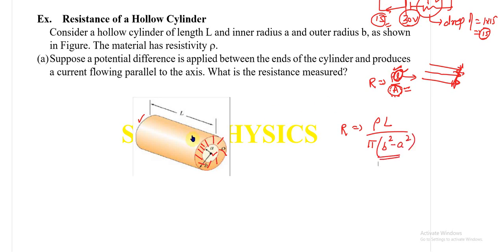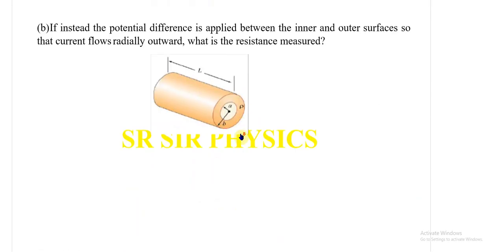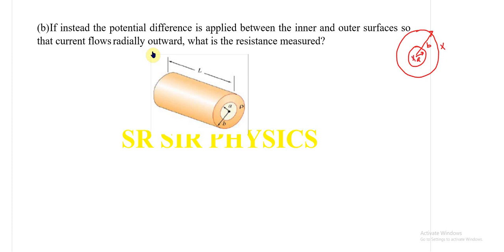Now the second part of the question is very important. Instead of across the ends, the potential difference is now applied between the inner and the outer surface, so that the current flows radially outward. In the front view, with inner radius a and outer radius b, the potential difference is between points A and B, so the current flows radially outward. This is known as radial flow of current.